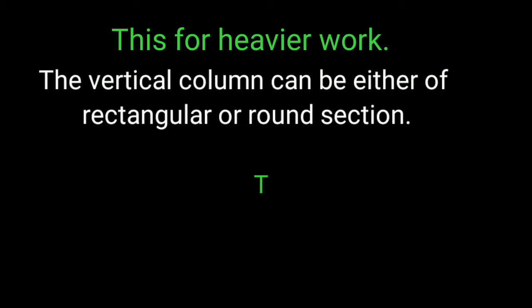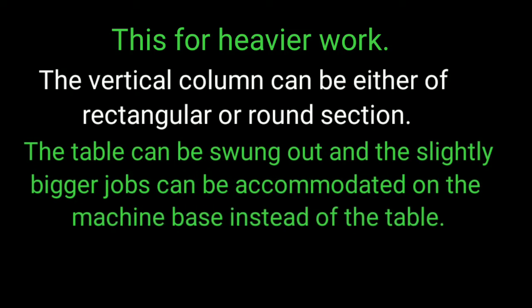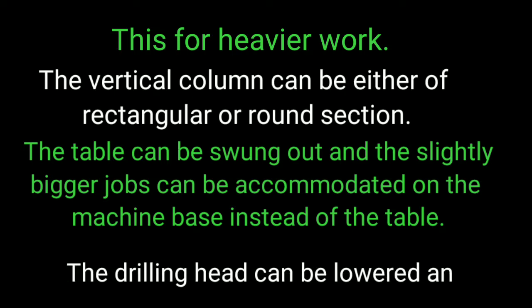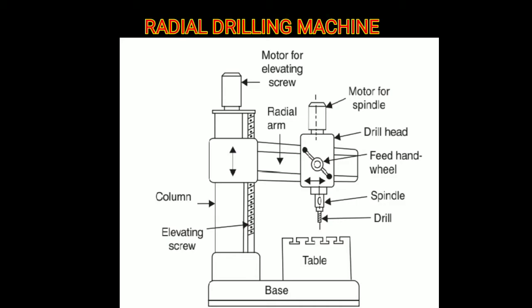Pillar type drilling machines are generally similar to sensitive drilling machines but are meant for heavier work. The vertical column can be either of rectangular or round section; the latter offers the advantage that the table can be swung out and slightly bigger jobs can be accommodated on the machine base instead of the table. The drilling head can be lowered and the hole drilled in the job.